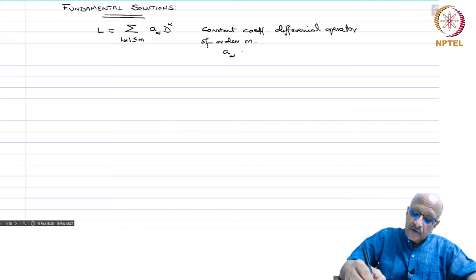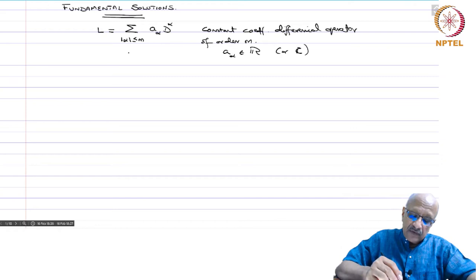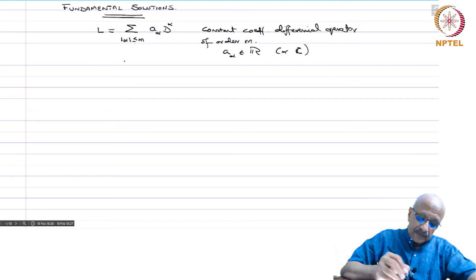The a_α's are all constants in ℝ or ℂ if you are working with complex numbers. D^α denotes the usual partial derivatives, and you are looking at all multi-indices of order less than or equal to m. Therefore, this is a constant coefficient differential operator.